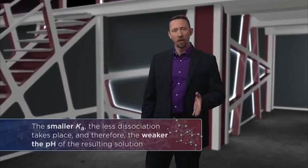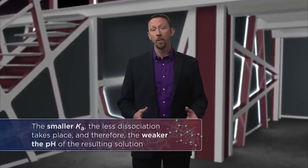We just finished exploring how the release of protons from certain compounds during dissociation leads to solutions of various pHs. During those discussions, we relied heavily on the observation that some acids ionize with great efficiency in solution, while others ionize only slightly in an equilibrium process governed by the constant Ka. The smaller the Ka value for an acid, the less dissociation that takes place, and therefore the weaker the pH of a resulting solution.